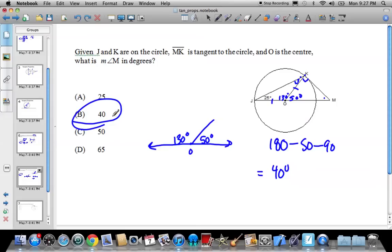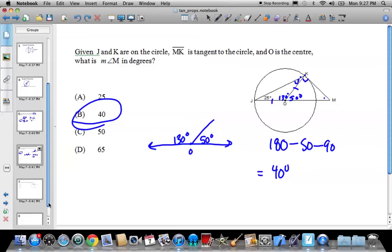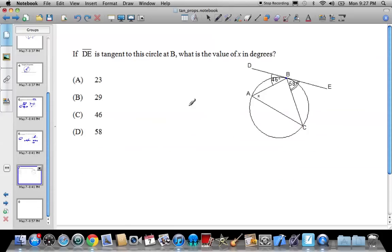So I know it's kind of tricky just to sit here and watch me do this. You've got to really start to try these, and each one is unique. You've got to really try to get your head wrapped around. I've got one more problem, and then we're done. So this says DE is tangent to the circle. What is the value of X?